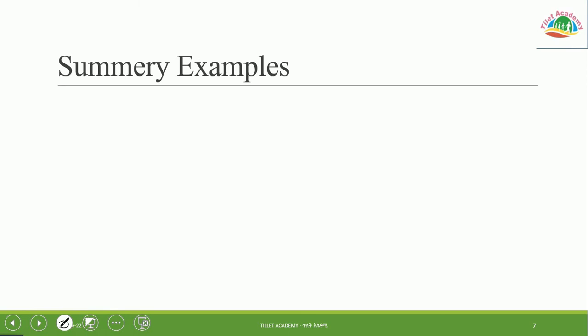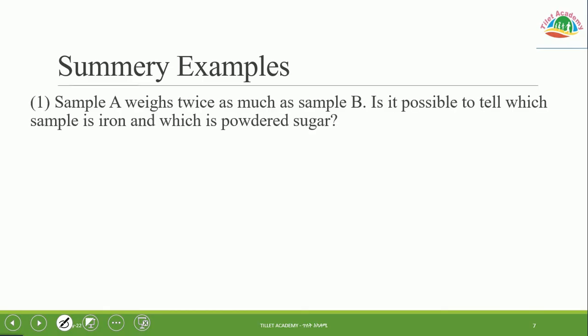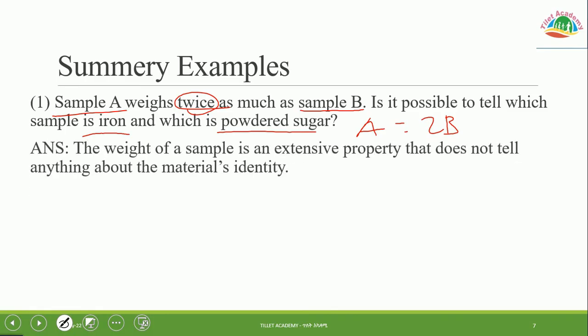Example: Sample A weighs twice as much as sample B. Is it possible to tell which sample is iron and which sample is sugar? The weight of the sample is an extensive property, so the mass does not tell anything about the material's identity.